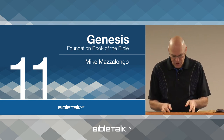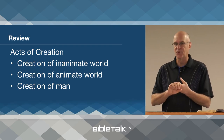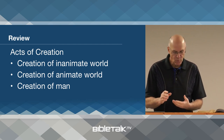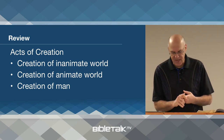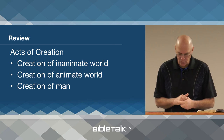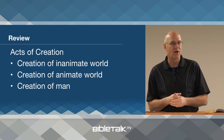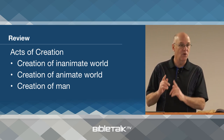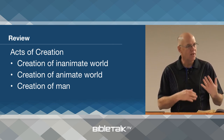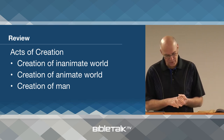In chapter one of Genesis we have seen the three basic acts of creation. Number one, the creation of the inanimate world. Number two, the creation of the animate world. Number three, the creation of man, who is a combination of the inanimate, the animate, and also the spiritual all in one being. We said that man has a triune nature — a reflection of God's triune nature.